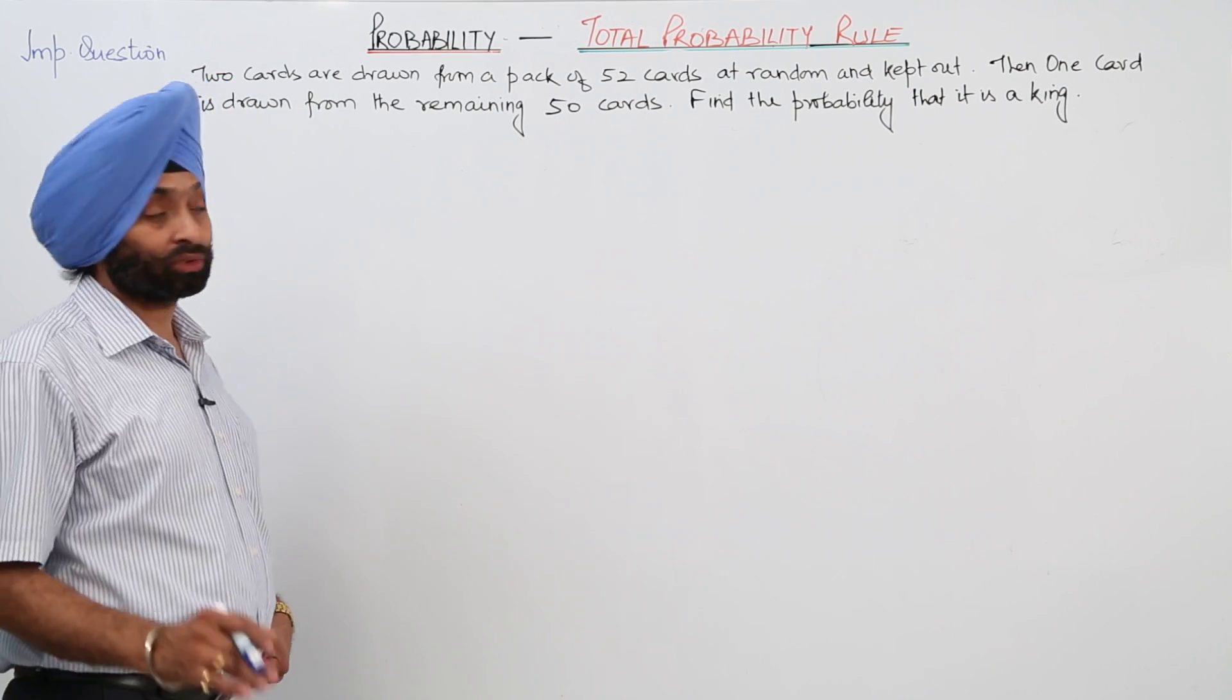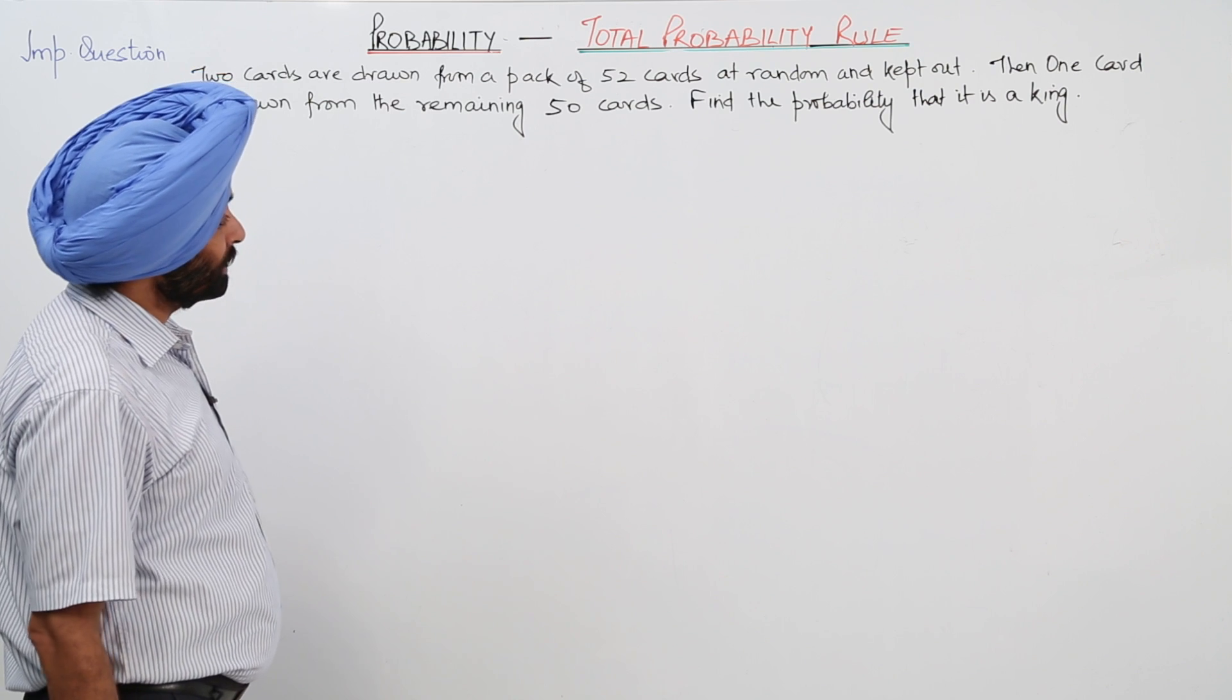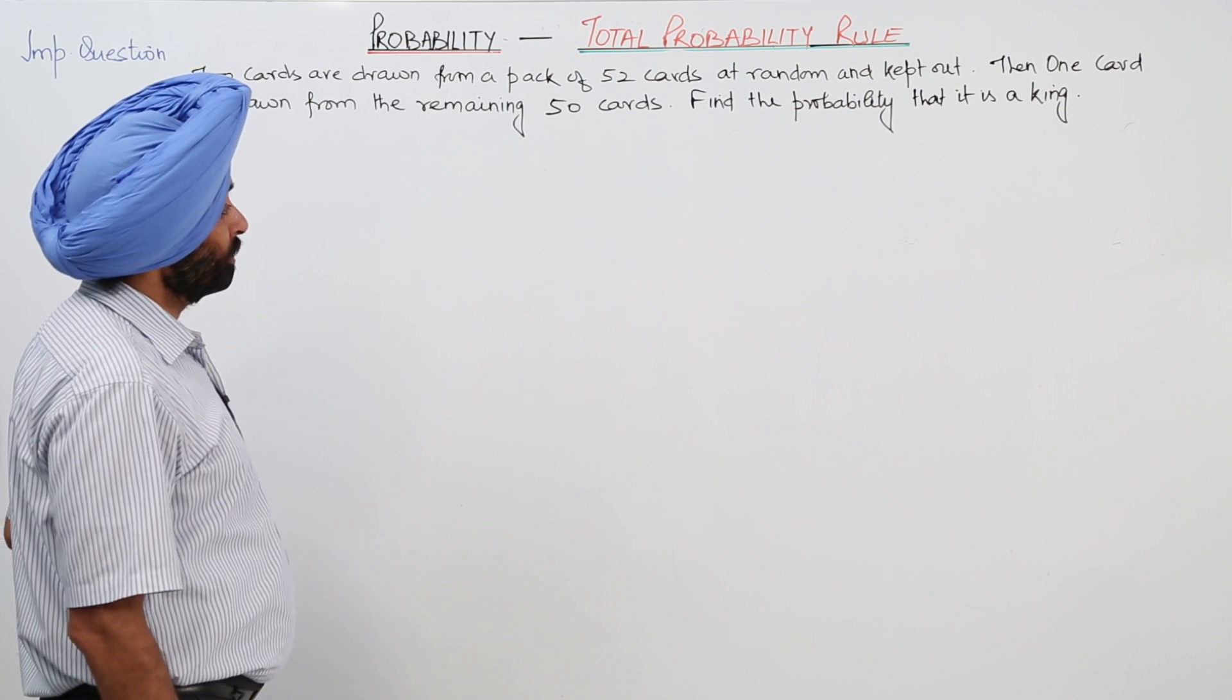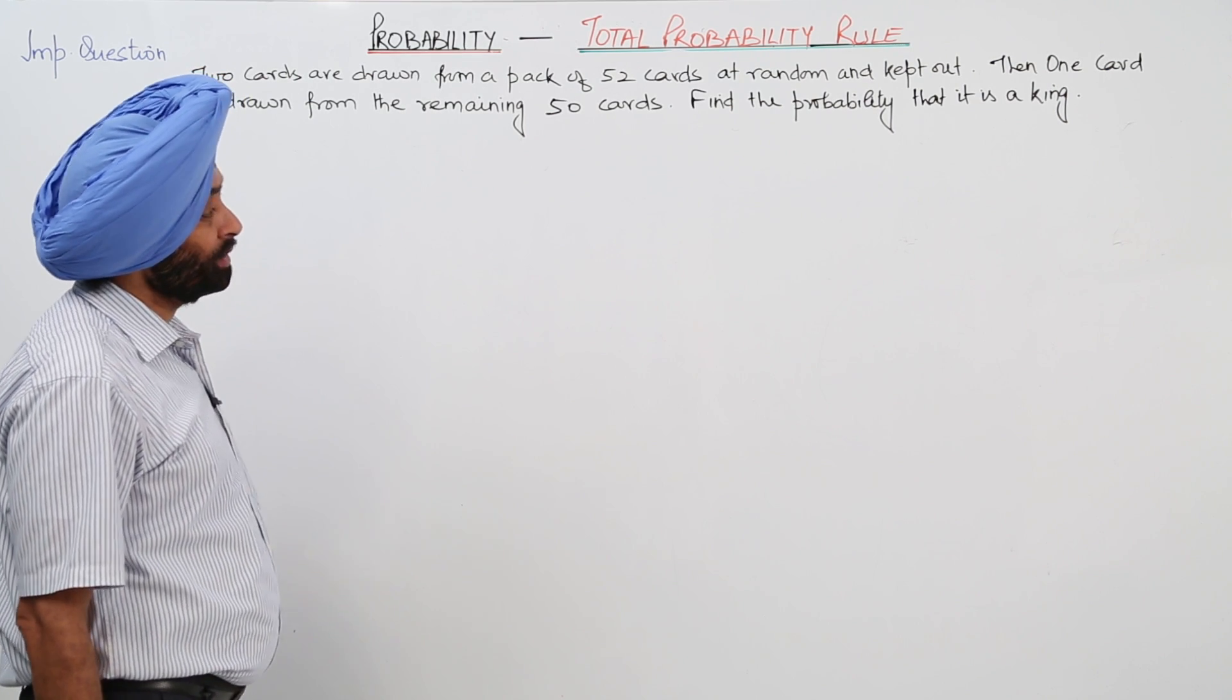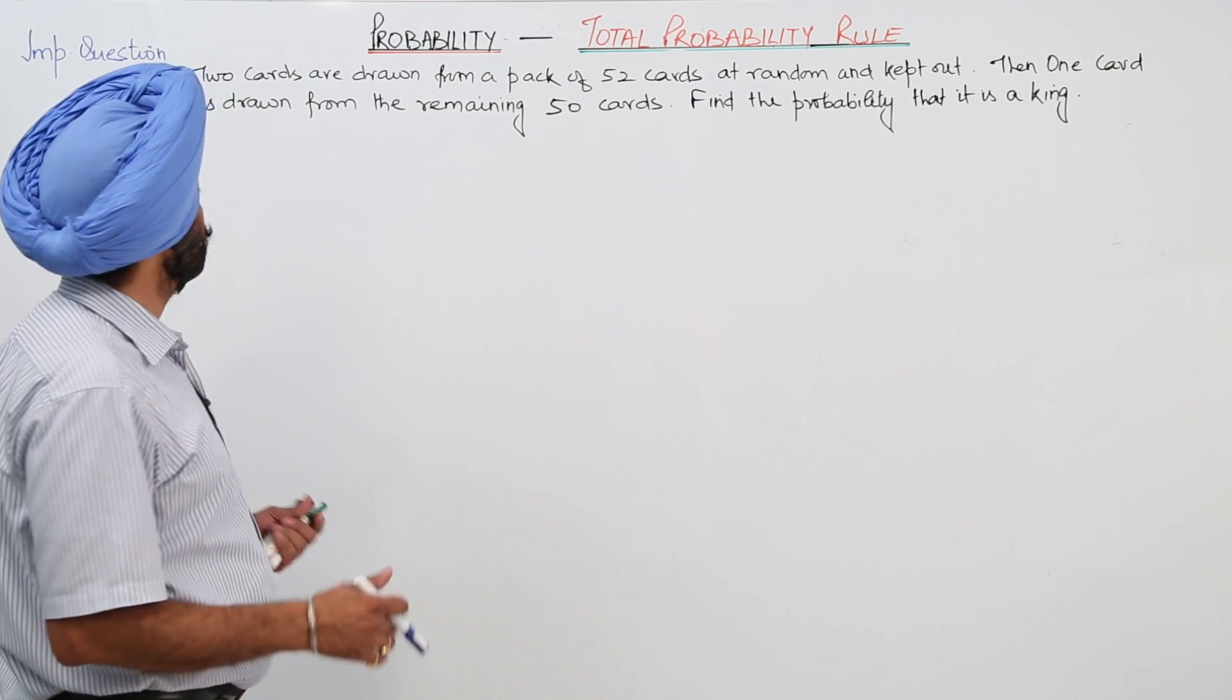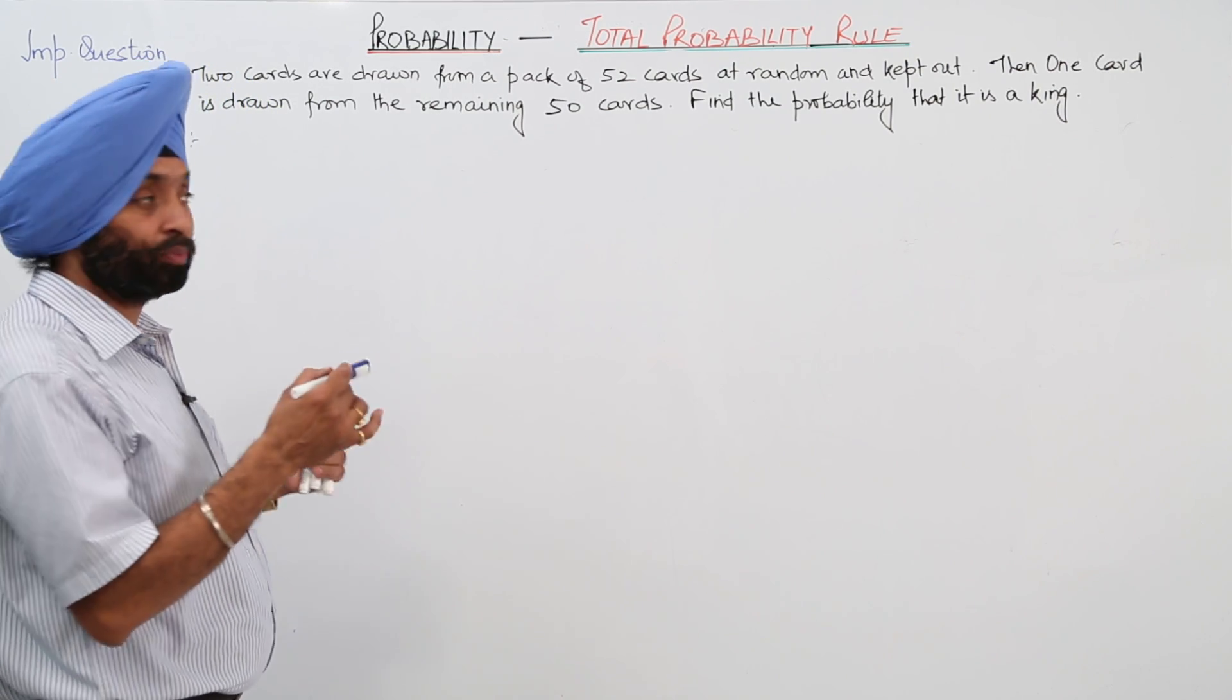A very important and very nice question. Now 2 cards are drawn from a pack of 52 cards at random and kept out. Then 1 card is drawn from the remaining 50 cards. Find the probability that it is a king. Now just look what I am writing and in the meantime I am going to explain you also.